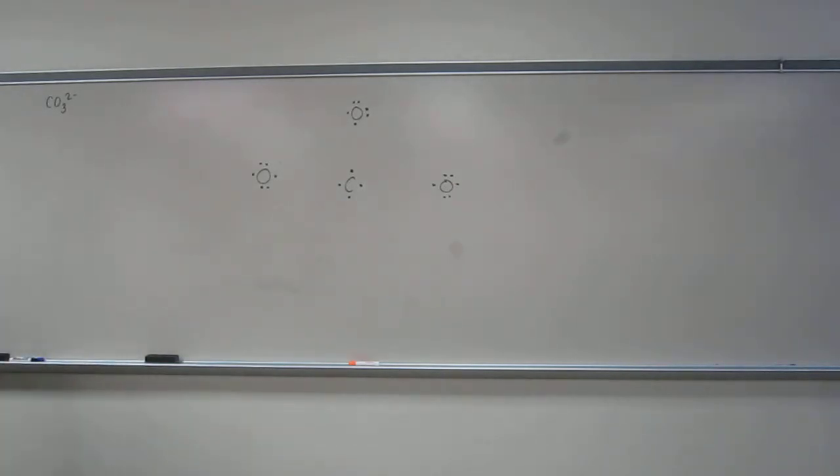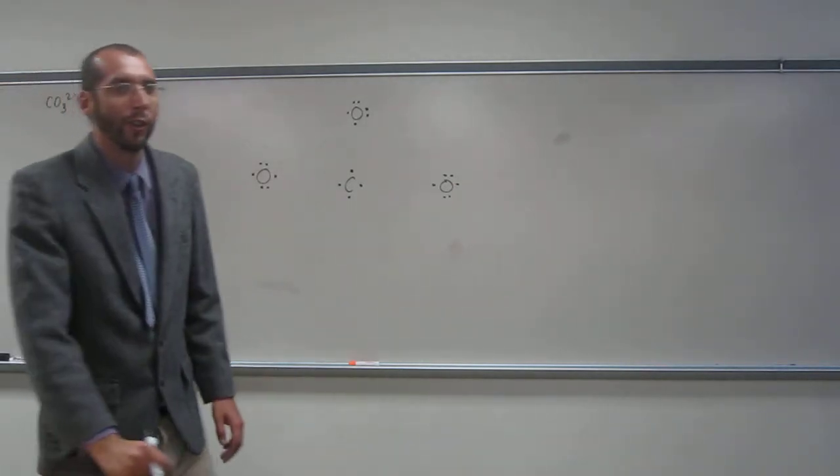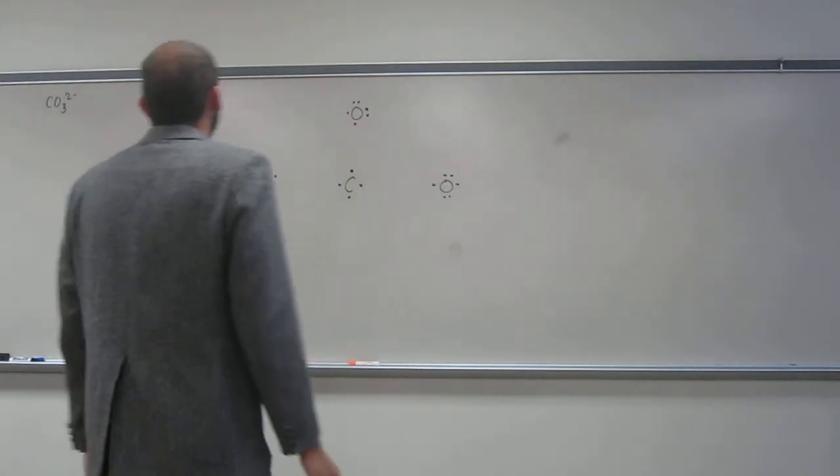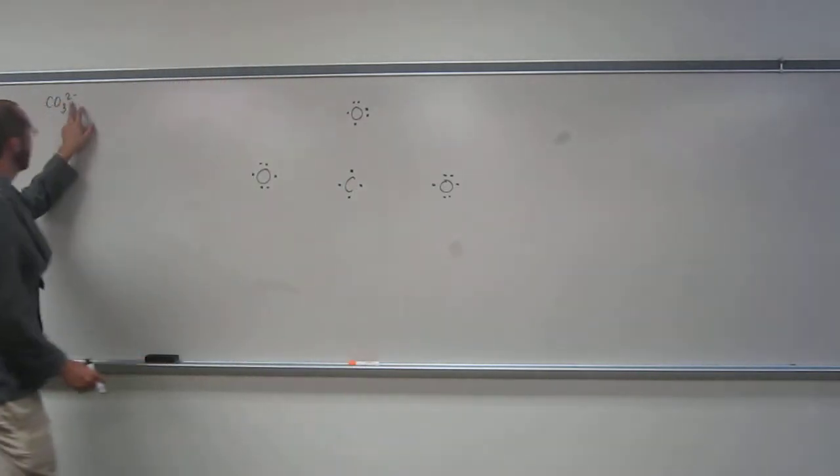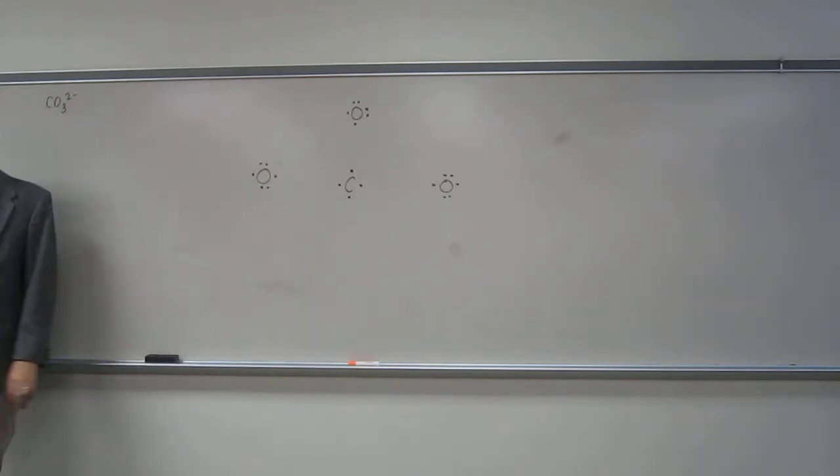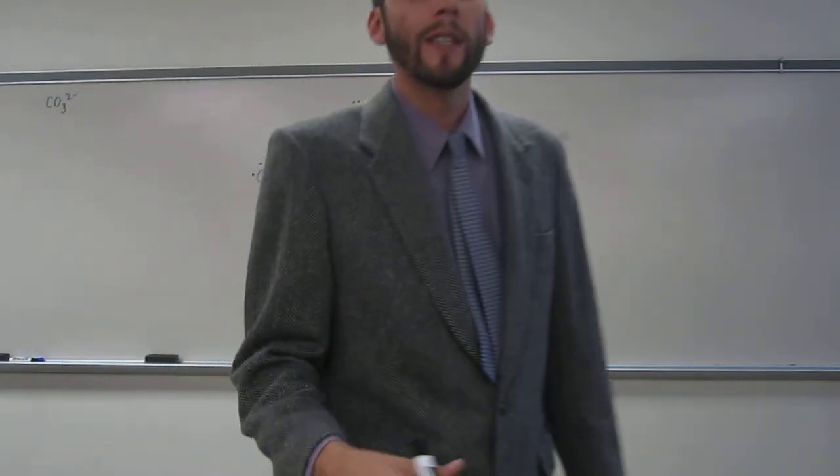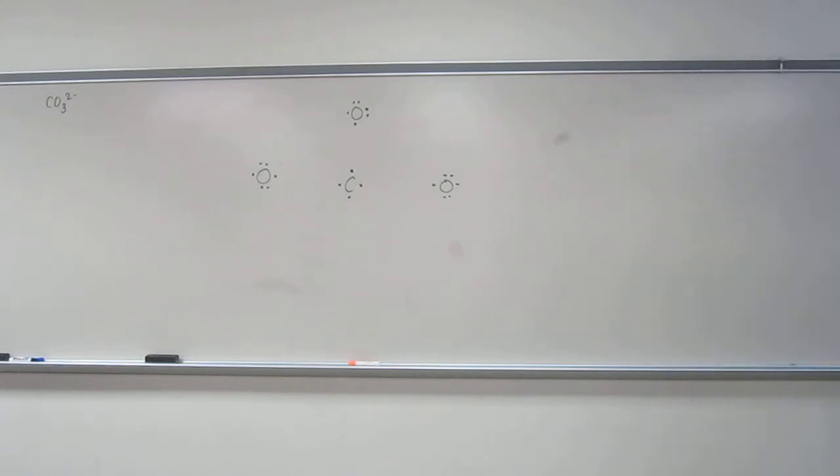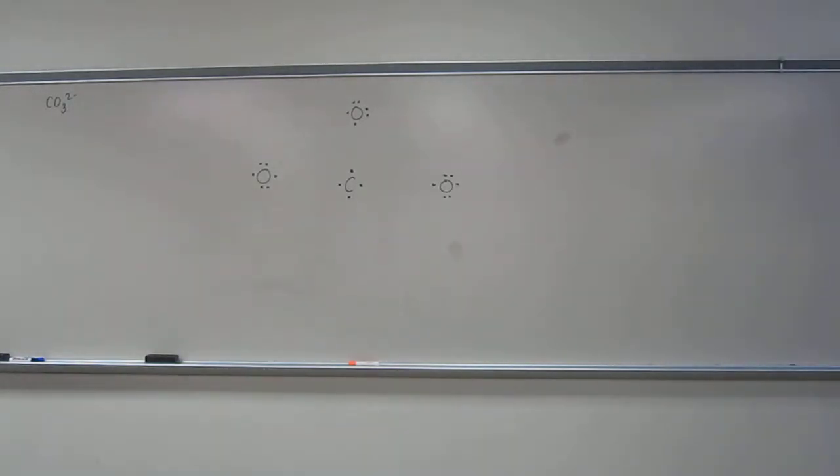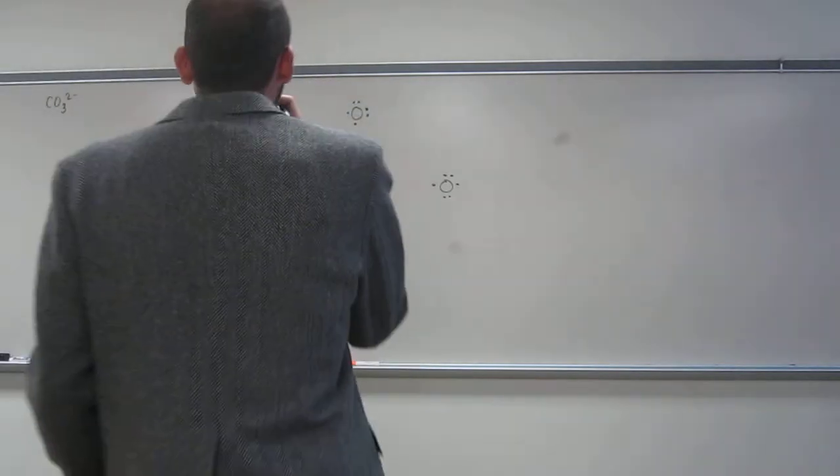So I drew them in such a way because I know what the structure is going to be. And also, notice up here, it says that I've got two extra electrons. Most of the time, those extra electrons will go on the most electronegative atoms. So in this case, you've got two electrons, so they're not going to go on the same atom. So put them on the two of the most electronegative atoms.